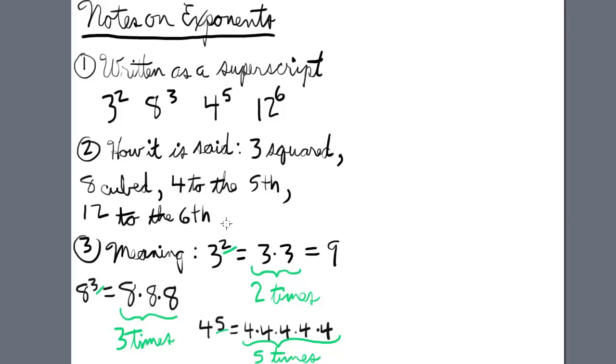What is the meaning of these exponents? Let's take 3 squared. 3 squared means 3 times itself 2 times, which is 9. 8 cubed means 8 multiplied by itself 3 times, 8 times 8 times 8.